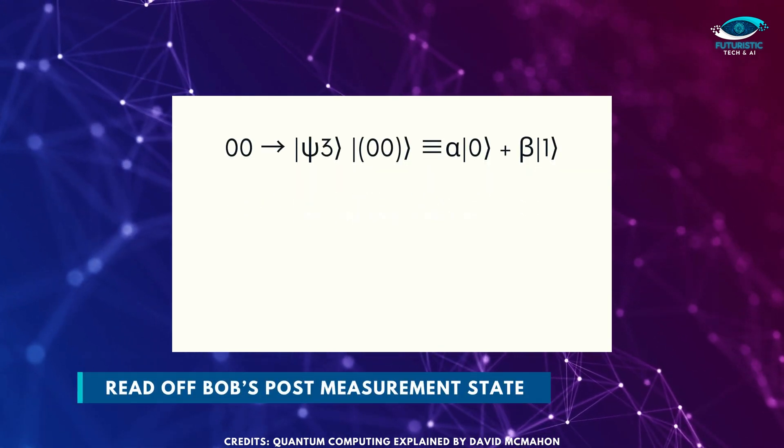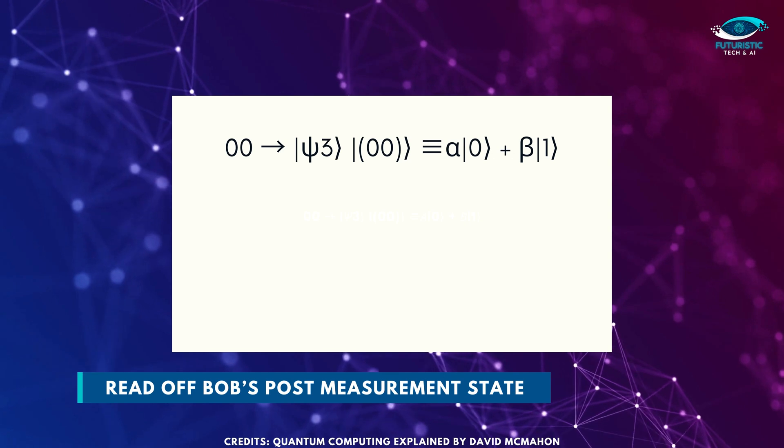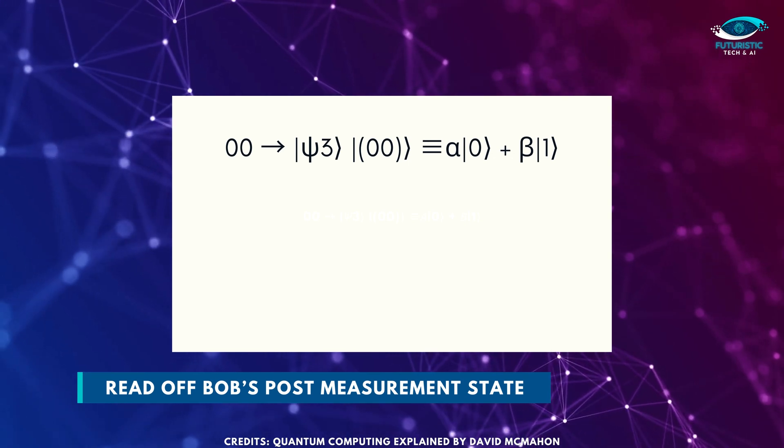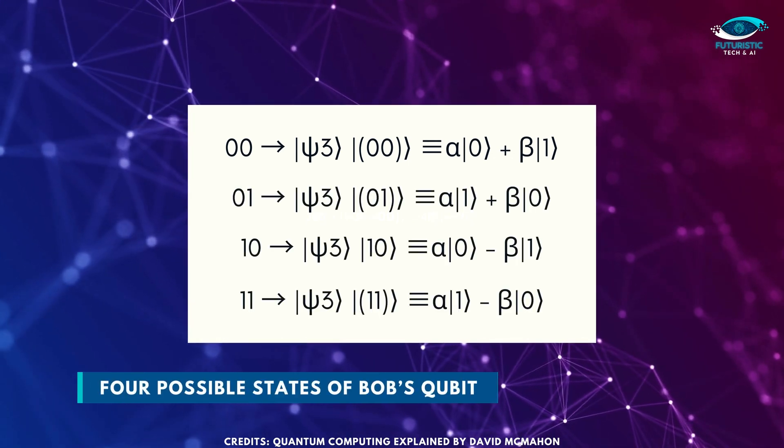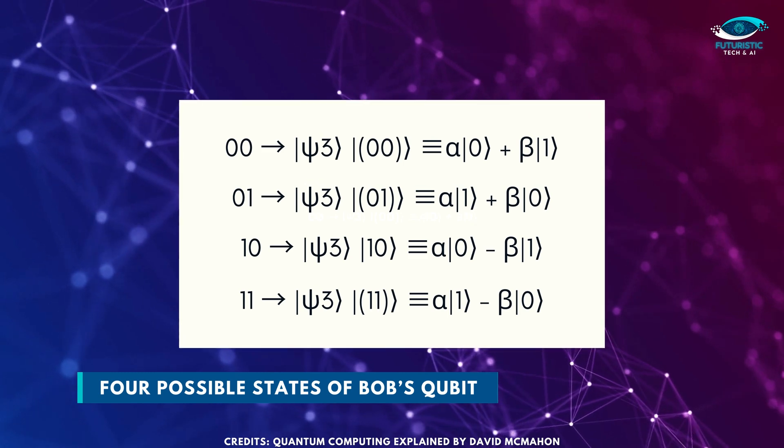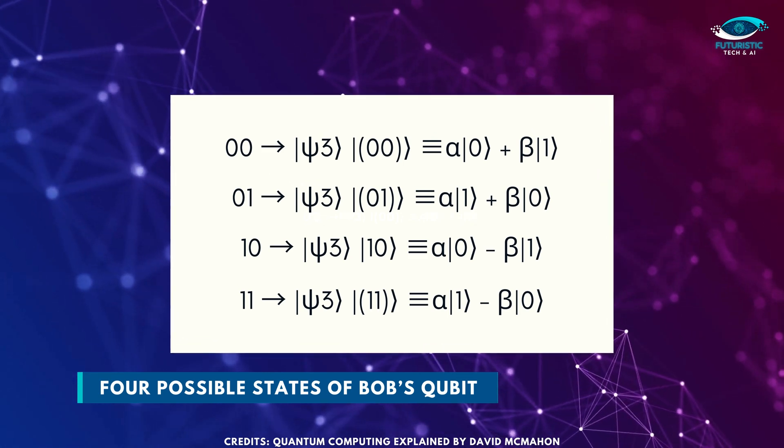Similarly, from the previous expression, we can read off Bob's post-measurement state, given the result of Alice's measurement. Depending on Alice's measurement outcome, Bob's qubit will end up in one of these four possible states.